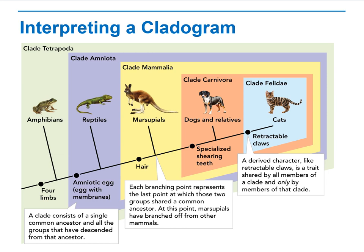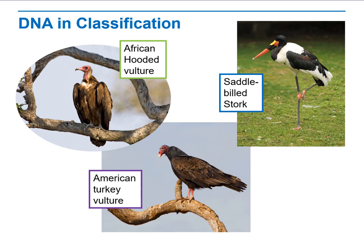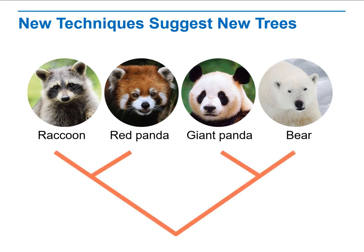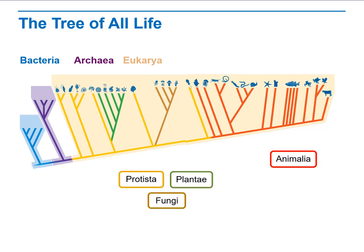The cladogram is based on characters found in the animals. We now include DNA in classification — having some characteristics with the same type of DNA but not exactly the same. As you can see, new techniques suggest that some animals may have the same external appearance but completely different internal structures or genotypes. All of these can be derived from the same characteristic. Regarding the tree of life, you can find these branches in bacteria, archaea, and eukaryotes.